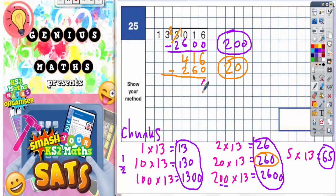6 take 0 is 6, 1 take 6 I can't do, so I need to borrow it, which makes 3, and the 1 I borrow makes this into 11. 11 take away 6 is 5, and 3 take away 2 is 1. So I'm down to 156.